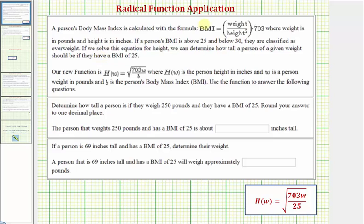If we solve this equation for height, notice we have height squared in the denominator. We can determine how tall a person of a given weight should be if they have a BMI of 25.